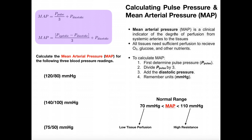So first of all, what is mean arterial pressure? Mean arterial pressure is a clinical indicator of the degree of perfusion from the systemic arteries to the tissues. When we say perfusion, we're generally talking about blood flow to peripheral tissues. For example, if the skeletal muscle was receiving high perfusion, that would mean the skeletal muscles are receiving a lot of blood flow. And remember that all tissues, regardless of what they are, need sufficient perfusion to live.